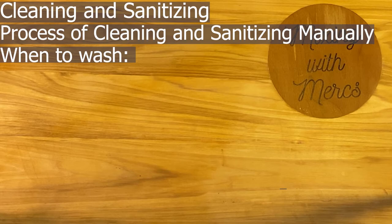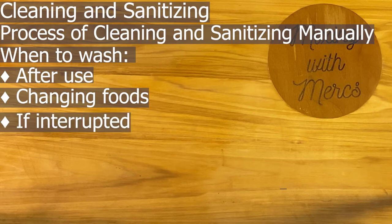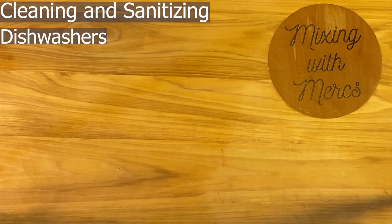It's important to know the appropriate times to wash food contact surfaces. The most obvious is after it's been used. Next is when you change your task or change your foods, to prevent cross-contamination. Also wash if you're interrupted — if you leave a prep area to go to the restroom or deal with customers. Finally, every four hours if you're doing a task continuously — for example, if you were chopping onions for four hours, you'd completely wash, rinse, and sanitize everything and start with new supplies.